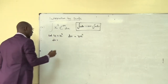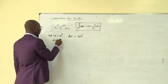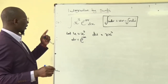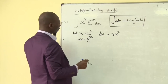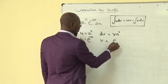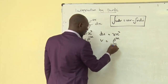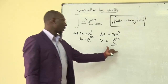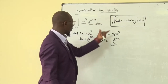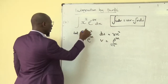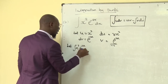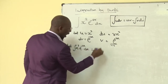Let dv = e^(−2x) dx. Integrating to find v: integrating an exponential gives the same function divided by the coefficient, so v = e^(−2x)/(−2). We also let the integral of x³·e^(−2x) dx equal I.